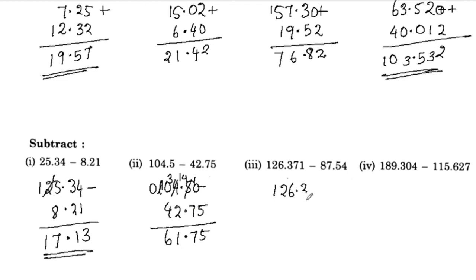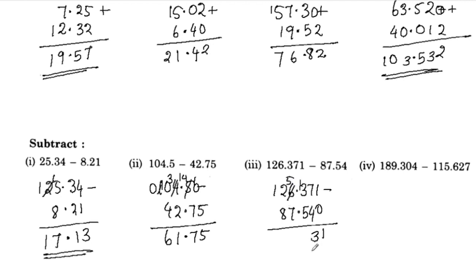126.371 minus 87.54: 1 minus 7 borrow gives 4, that's 3. 13 minus 5 is 8. 15 minus 7 is 8. 11 minus 8 is 3. The answer is 38.831.